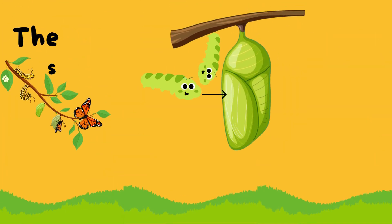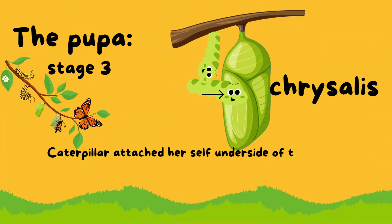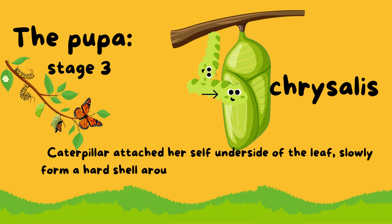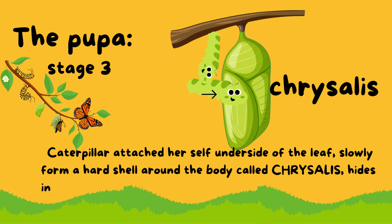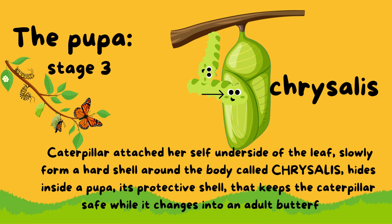Stage 3: pupa. The caterpillar attaches herself to the underside of a leaf and slowly forms a hard shell around its body called a chrysalis. Hidden inside the pupa, this protective shell keeps the caterpillar safe while it changes into an adult butterfly.